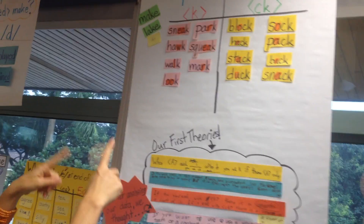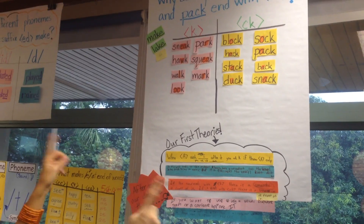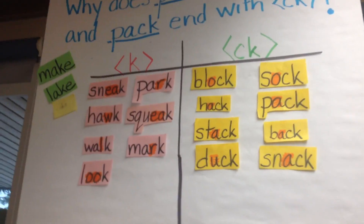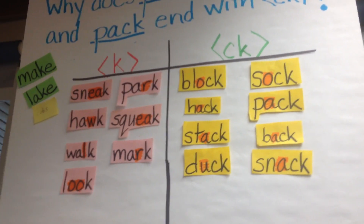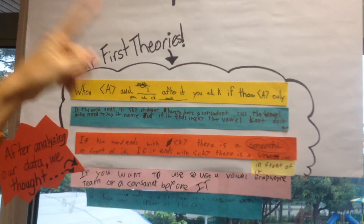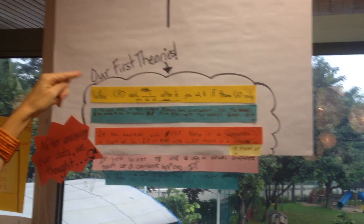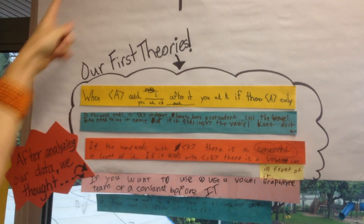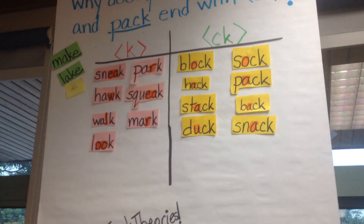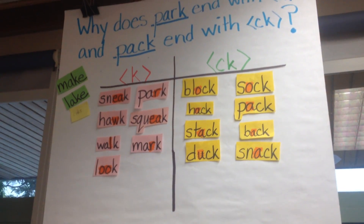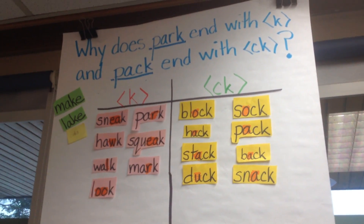What we did is we used the concept attainment chart, and the kids used stickies to first gather information, and then from the stickies they made some theories. They came up with their first theories about what they thought. Then the next day when we came back to it, I had written them up big so we could analyze it as a whole group, rather than in small groups, because sometimes the stickies aren't as clear.